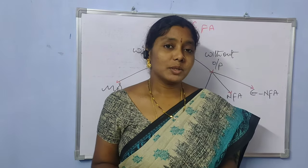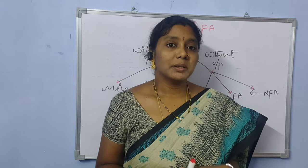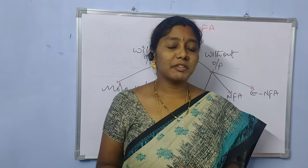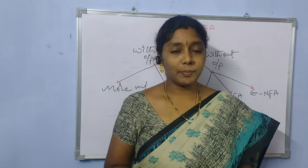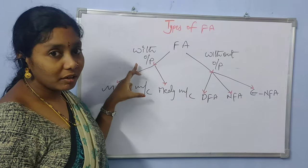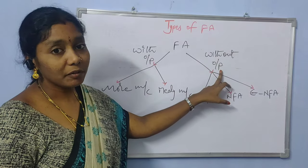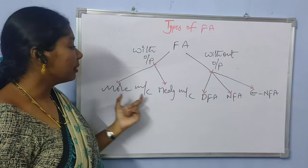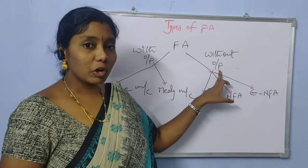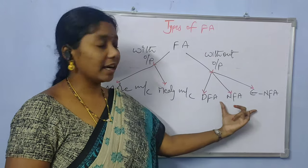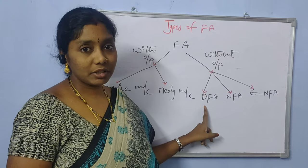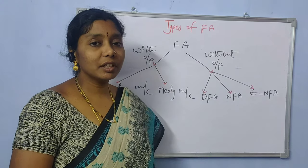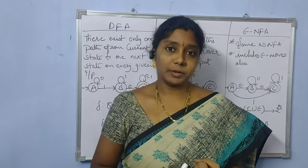Welcome back to the channel. Today we'll look at types of finite automata. Based on the output generated by the finite automata, we have two groups: finite automata with output and finite automata without output. Finite automata without output has three categories: DFA (Deterministic Finite Automata), NFA (Non-Deterministic Finite Automata), and Epsilon-NFA, which is NFA with epsilon moves.